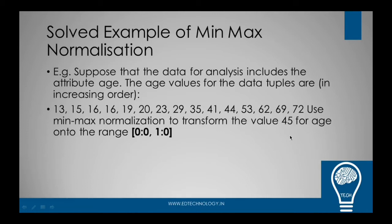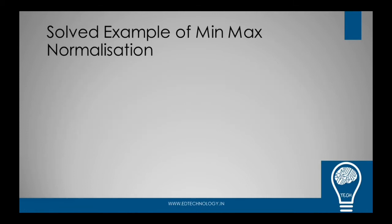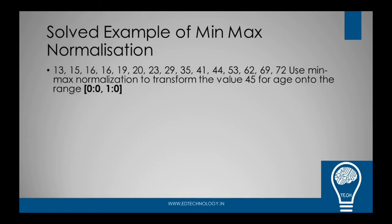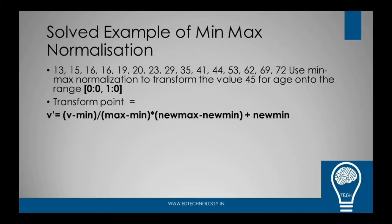In order to do this, we would require the range of the numbers and also the number to be transformed. Going back to the formula, what do we need? v' equals v minus min divided by max minus min times new_max minus new_min plus new_min. Here, v is the value which we want to transform, this particular value is the value which we want to transform.